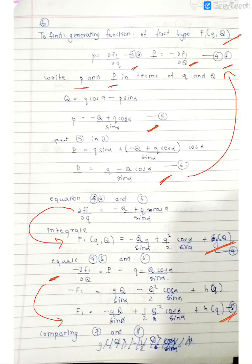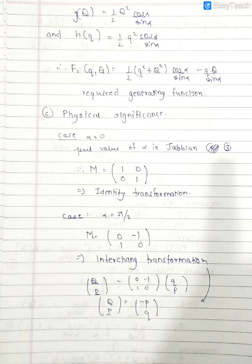Similarly, while integrating this one, I get this as a final condition. Now I am comparing equation 7 and equation 8. Whatever the common part of them will be definitely F1, and some things which are not common. This term is not common and this term is not common. These are the two extra terms, the h of q and the g of capital Q.